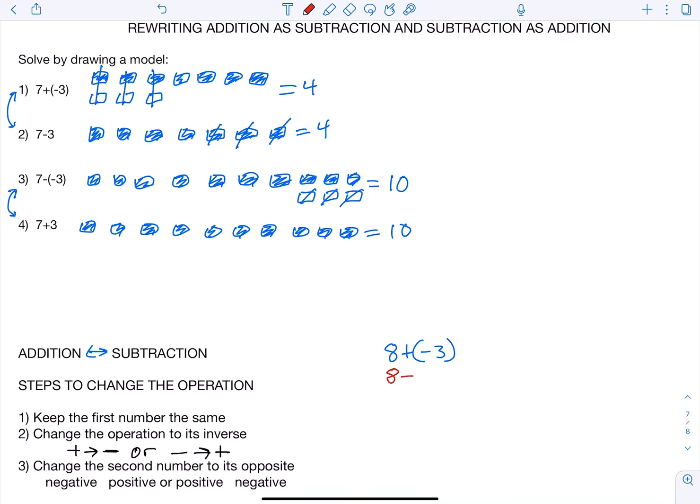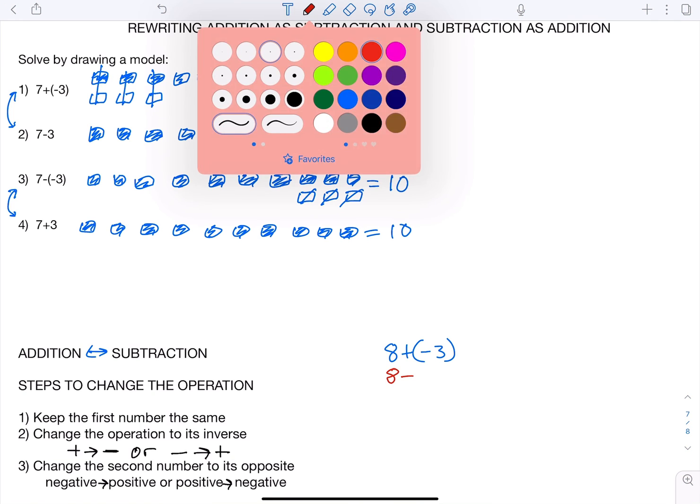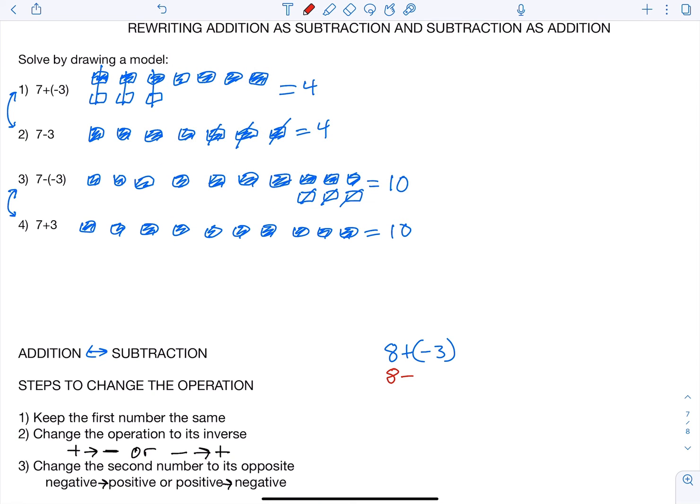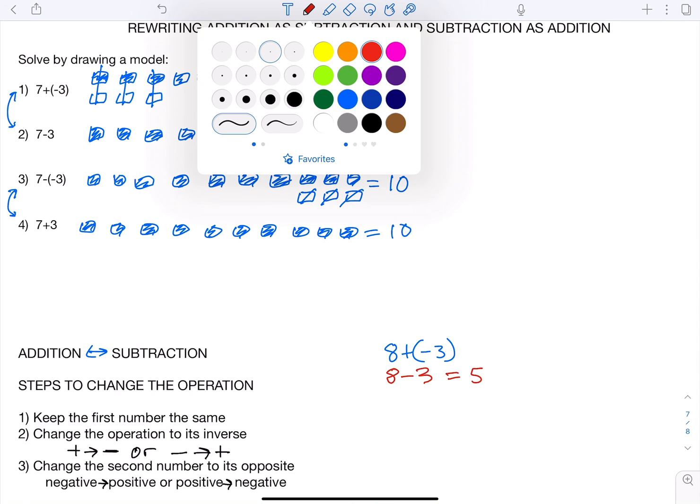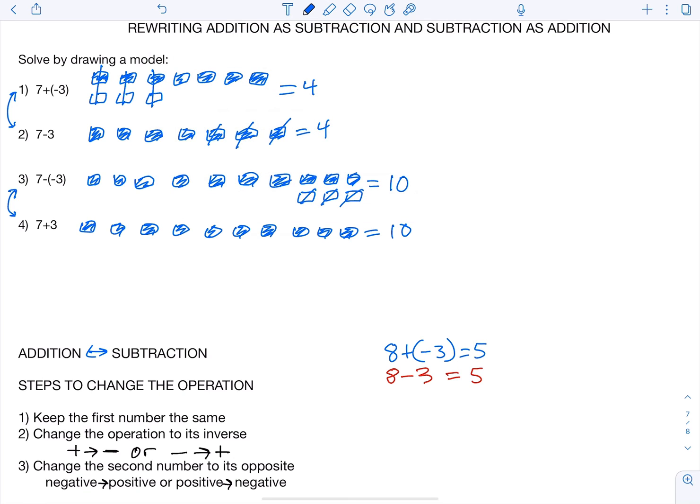And then step 3, change the second number to its opposite. So if we have negative, it's turning into a positive, or positive turning into a negative. So up here, I had negative 3. The opposite of negative 3 is positive 3. So 8 plus negative 3 and 8 minus positive 3 are both equal to the same thing. 8 minus 3 is 5.